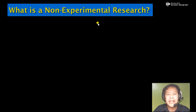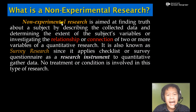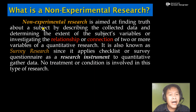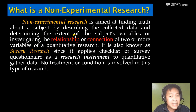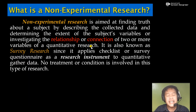Non-experimental research does not undergo the experimentation stage. It doesn't have an experimental group or a control group. Non-experimental research is aimed at finding truth about a subject by describing the collected data, determining the extent of the subject's variables, or investigating the relationship or connection of two or more variables of a quantitative research.